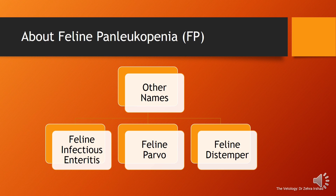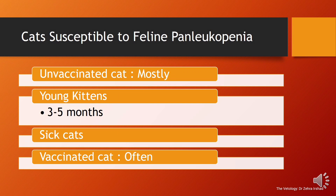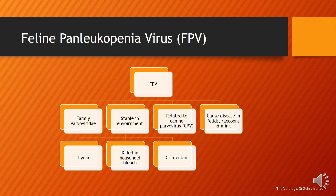Cats most susceptible to feline panleukopenia are mostly unvaccinated cats, young kittens of three to five months, or sick cats. It can also affect vaccinated cats in some cases.